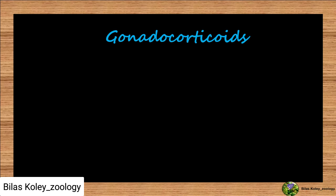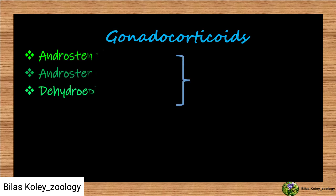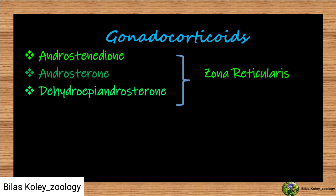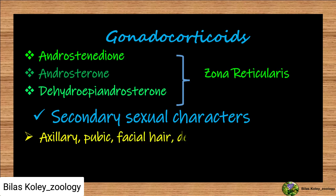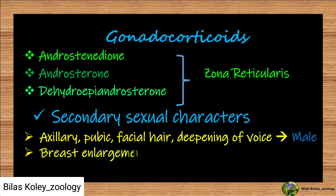Sex corticoids, also called gonadocorticoids, include androstenedione and dehydroepiandrosterone. These are secreted by the zona reticularis of the adrenal cortex. They also include small amounts of female sex hormones like estrogen. They help in the development of secondary sexual characters of male type, such as distribution of axillary, pubic, and facial hair, deepening of voice, etc. Estrogen stimulates the appearance of female secondary sexual characters like breast enlargement and beginning of menstruation.